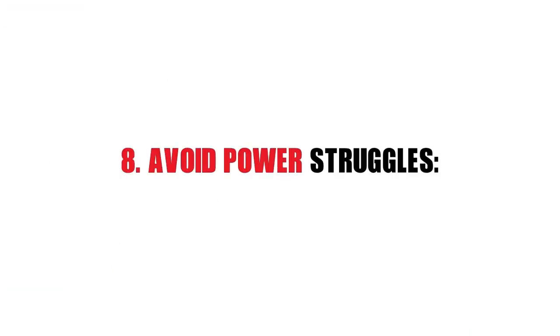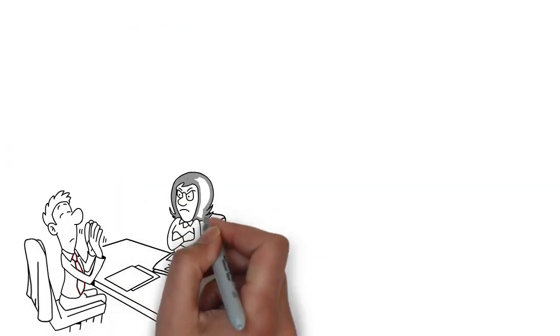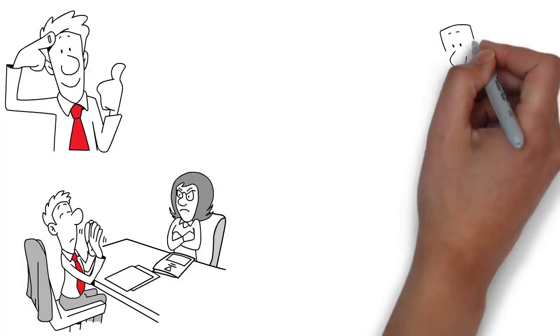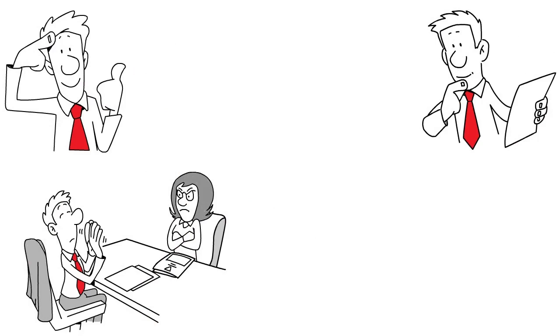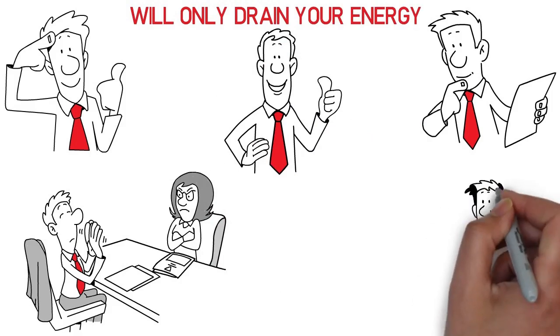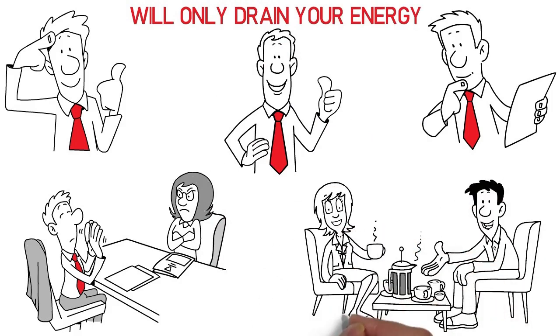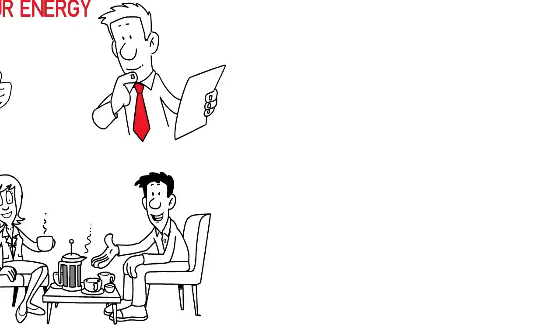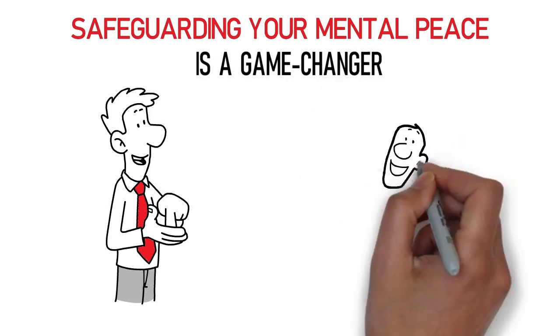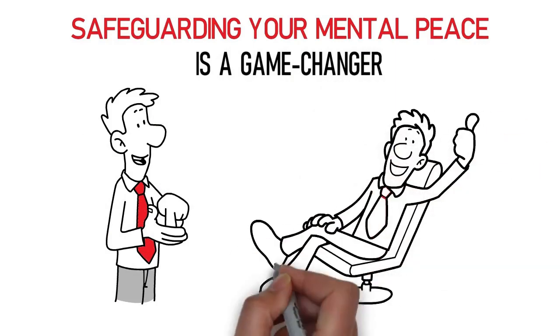8. Avoid power struggles. In relationships with narcissistic dynamics, it's essential to choose your battles wisely. Recognize situations where engaging in an argument isn't beneficial and will only drain your energy. Maintain your composure during interactions. Staying calm and collected helps prevent escalation and keeps conflicts at bay, safeguarding your mental peace. Mastering the art of avoiding power struggles is a game-changer, guiding you towards a more serene and empowered life.